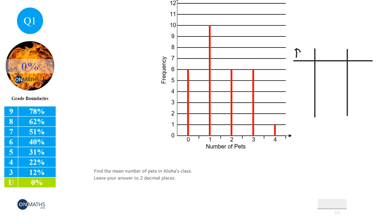We've got pets, we've got the frequency, and we'll worry about the last column in a second. So 0 pets, the frequency is 6. 1 pet, the frequency is 10. 2 pets, the frequency is 6. 3 pets, the frequency is 6, and 4 pets, the frequency is 1.